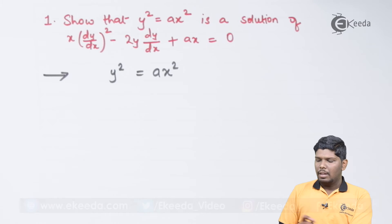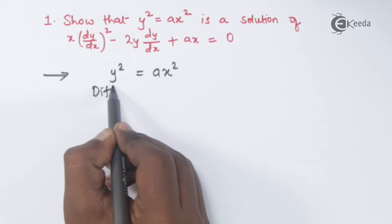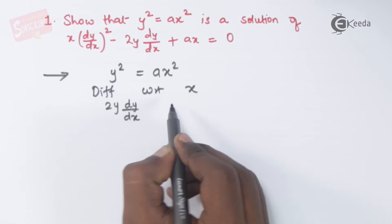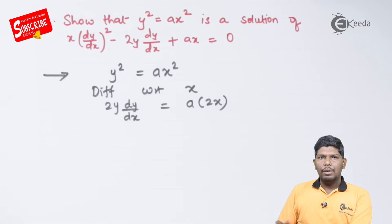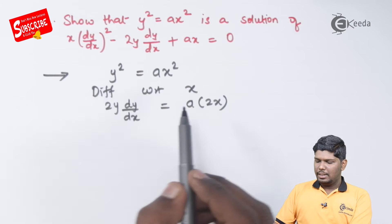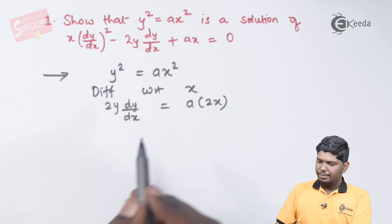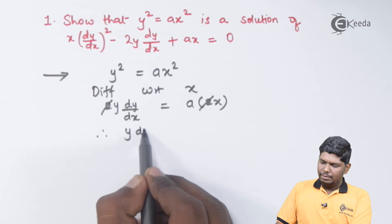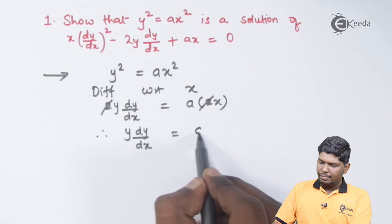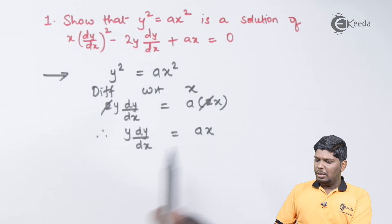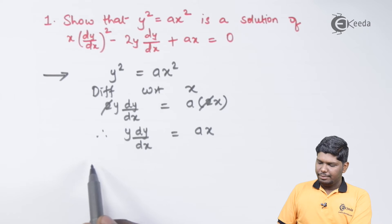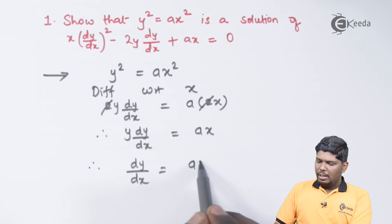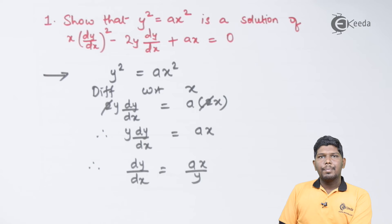This will give you 2y(dy/dx) = a(2x). 2 will be cancelled. y(dy/dx) = ax, so dy/dx = ax/y.